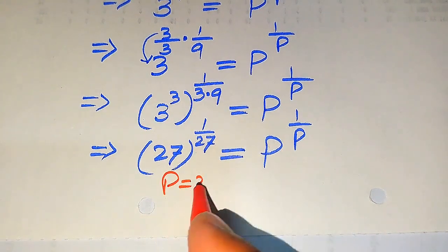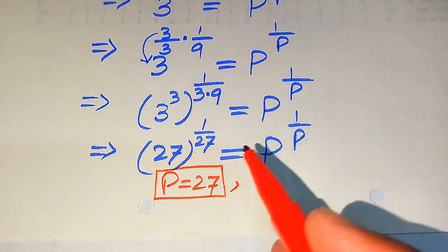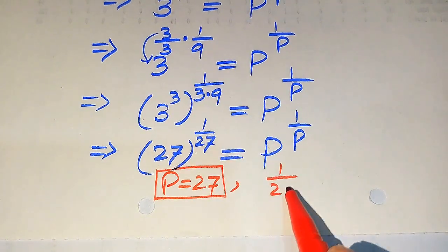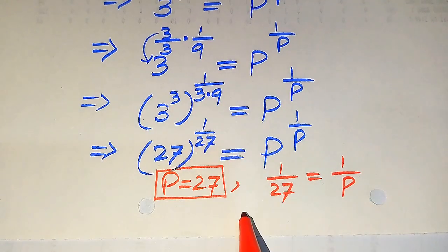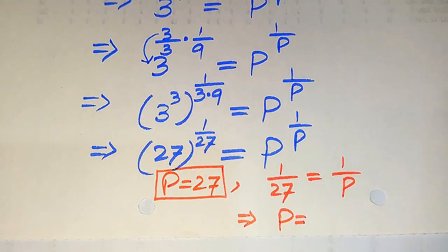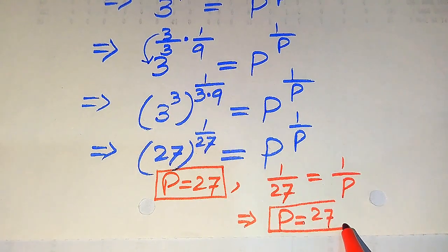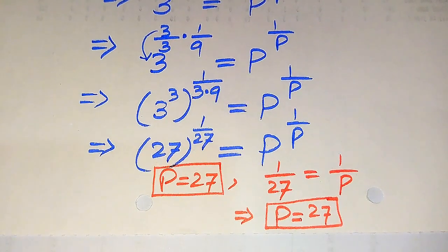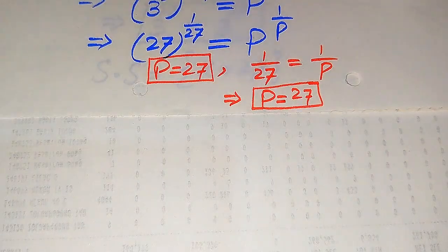Now we compare both sides. When we compare the bases, we directly get p equals 27. When we compare the exponents, we get 1 over 27 equals 1 over p, and taking the reciprocal of both sides again gives p equals 27. Both cases give the same value, so there is only one root of the given equation: p equals 27.